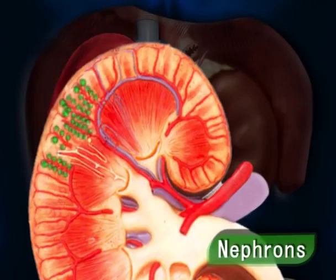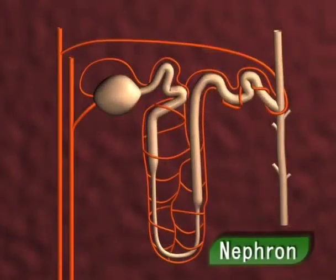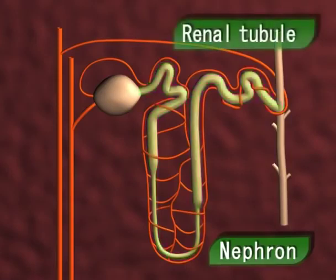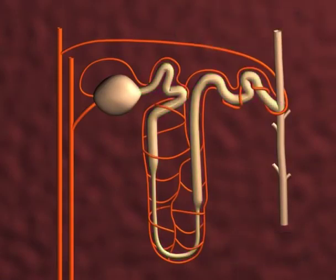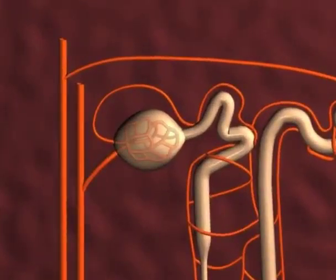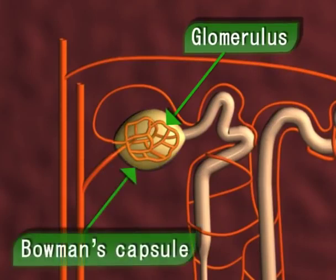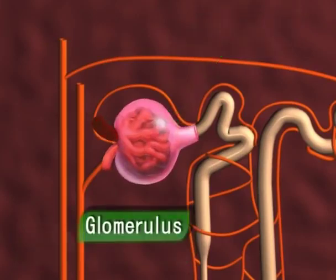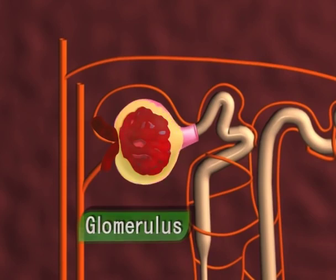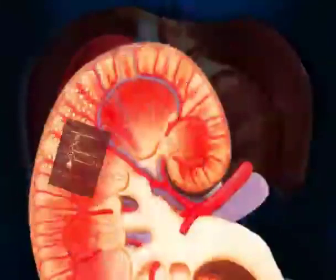The cortex and medulla together comprise millions of nephrons, all packed together. The nephron is the structural and functional unit of a kidney. Each nephron consists of a renal corpuscle and a renal tubule. A renal corpuscle is composed of two structures: a tangled cluster of blood capillaries called the glomerulus, and a thin-walled sac-like structure called the Bowman's capsule, which surrounds the glomerulus. The glomerulus is a miniature filtering device consisting of a tightly coiled network of capillaries where waste is filtered from the blood.